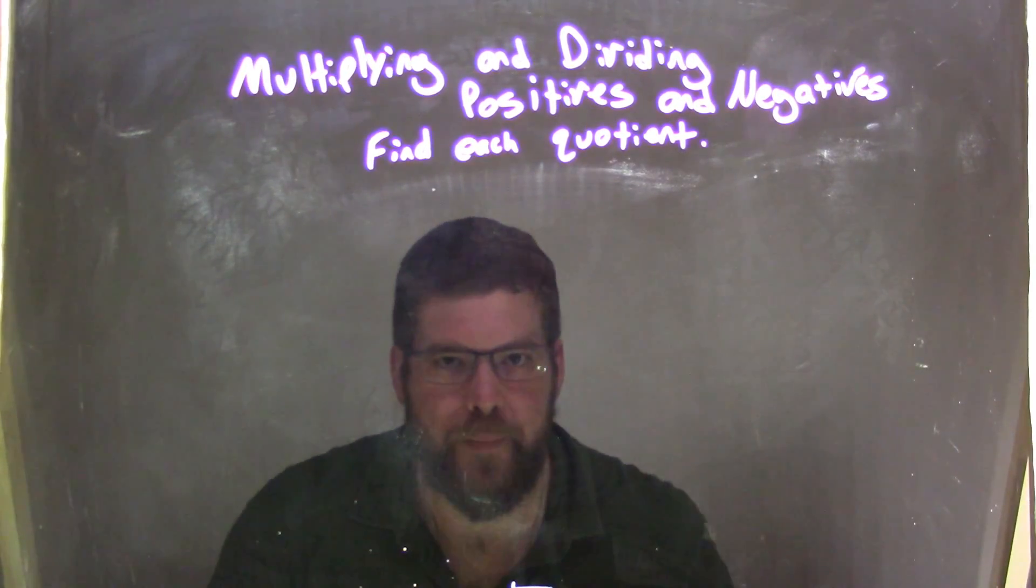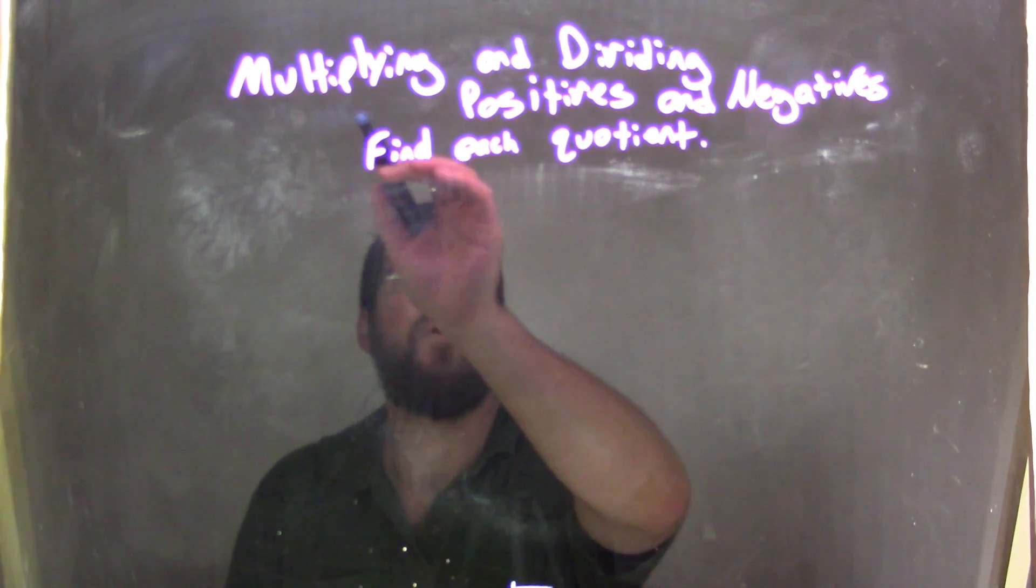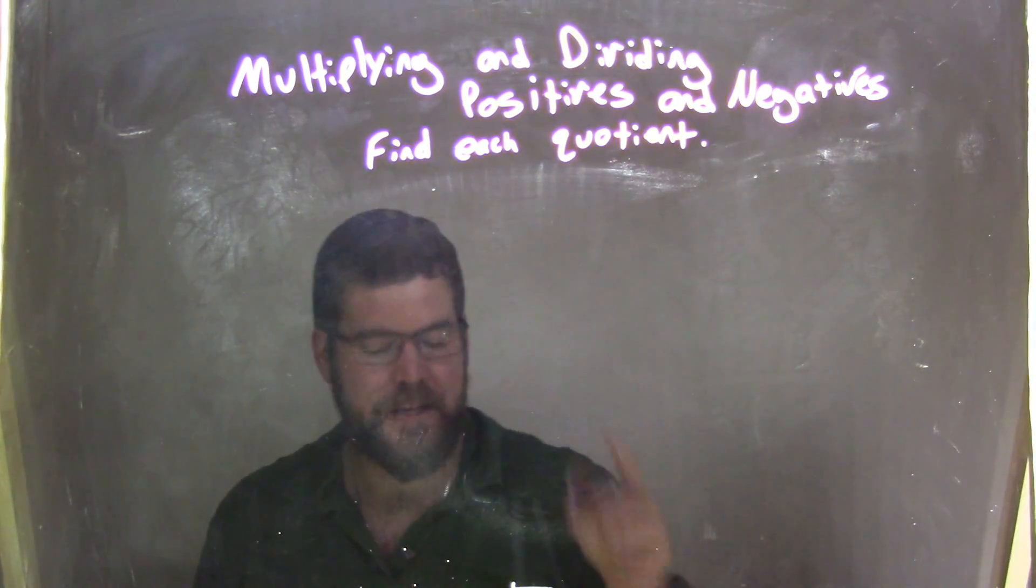Hi, I'm Sean Gammon, and this is Minute Math. Today we're going to learn about multiplying, dividing positives and negatives, and we're going to find each quotient.